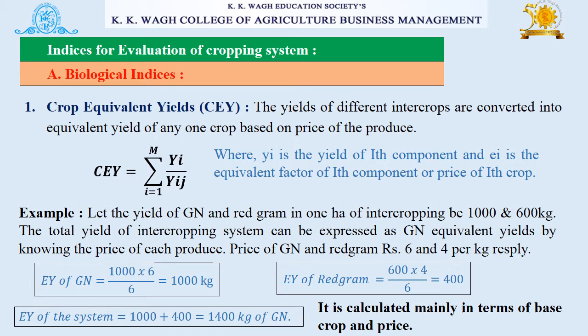First is biological indices — under that, crop equivalent yield (CEY). The yields of different intercrops are converted into equivalent yield of any one crop based on the price of the produce — that is crop equivalent yield. For example, let the yield of groundnut and black gram in one hectare of intercropping be 1600 kg. The total yield of the intercropping system can be expressed as groundnut equivalent yield by knowing the price of each produce. The price of groundnut and black gram is given as 6 and 4 rupees per kg respectively, and by putting the values into the formula we get the crop equivalent yield.